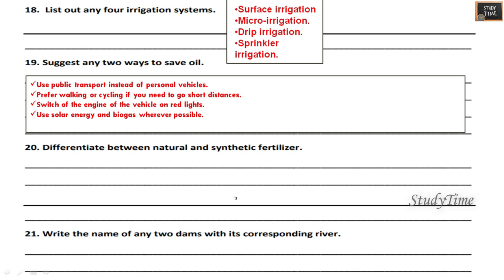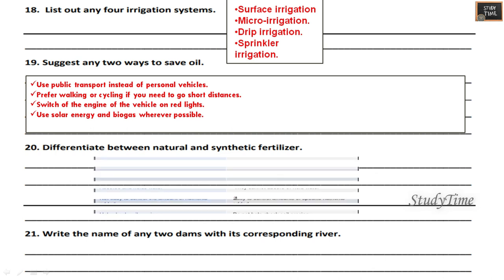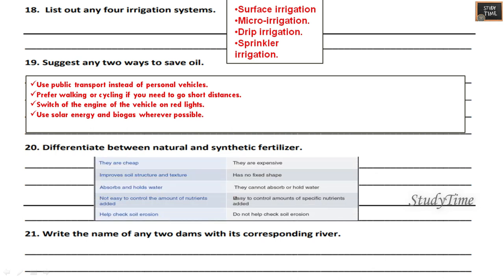Differentiate between natural and synthetic fertilizer using a tabular column. Natural fertilizers are cheap, while synthetic ones are expensive. Natural fertilizers improve soil structure and texture, observe and hold water, and help check soil erosion. Synthetic fertilizers cannot hold water, do not help check soil erosion. Natural fertilizers are not easy to control in terms of nutrients added, while synthetic ones allow easy control of specific nutrients.